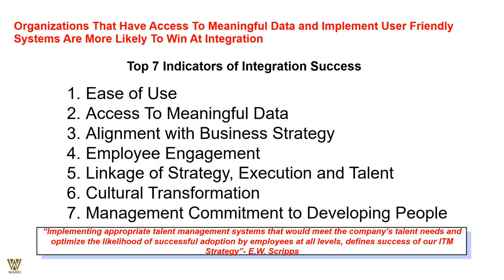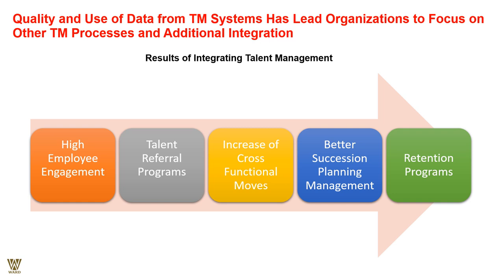The seven indicators of successful integration are: ease of use, access to meaningful data, alignment with business strategy, employee engagement, linkage of strategy execution and talent, cultural transformation, and management commitment to developing people. When an organization integrates talent management, the results include high employee engagement, a strong referral program, increased cross-functional moves, better succession planning, improved overall retention, and positive outcomes for the company, employees, vendors, and customers alike.